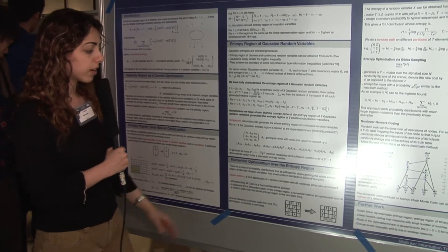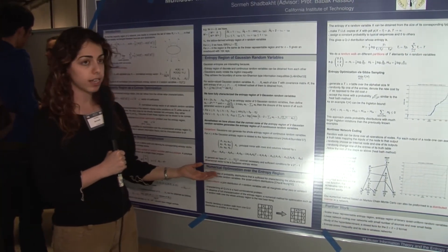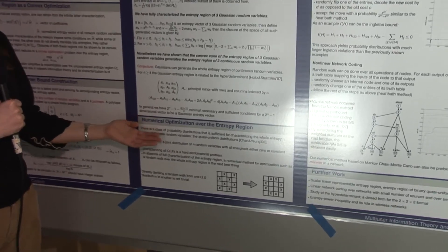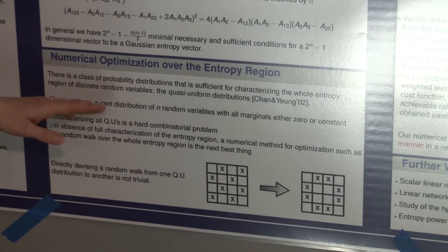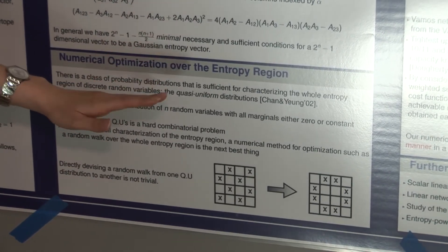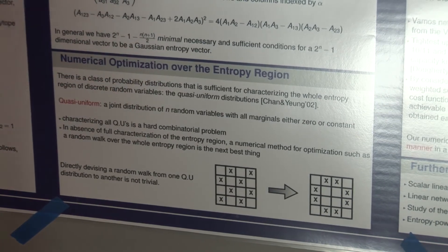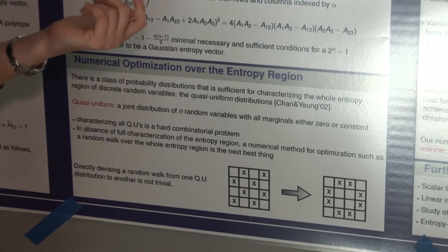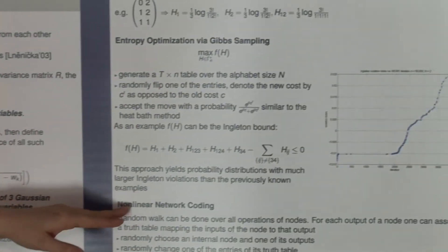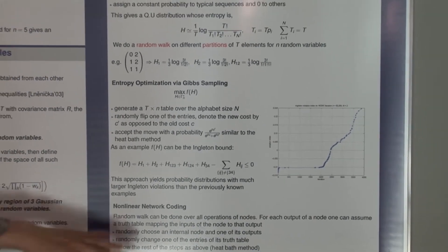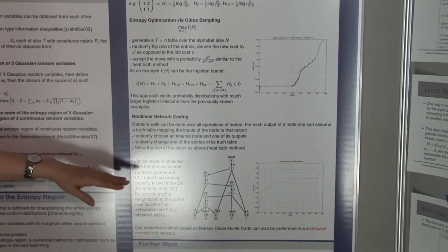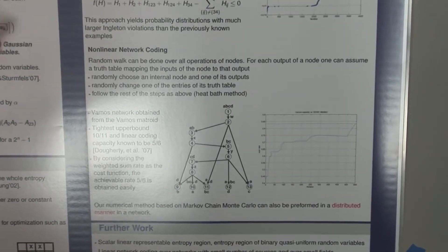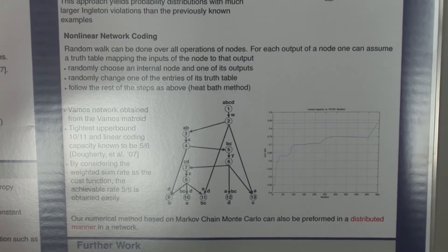Then we have studied a numerical optimization over the entropy region, which is probably the best option in the absence of analytical characterization of the entropy region. We devise a Markov chain Monte Carlo method, and we do a random walk over the region of entropy vectors. Our method can be used for optimization of function of entropy and also can be used for doing non-linear network coding. We have used it in different examples, and in all examples it has found the desired solution pretty quickly and shows to be very promising.